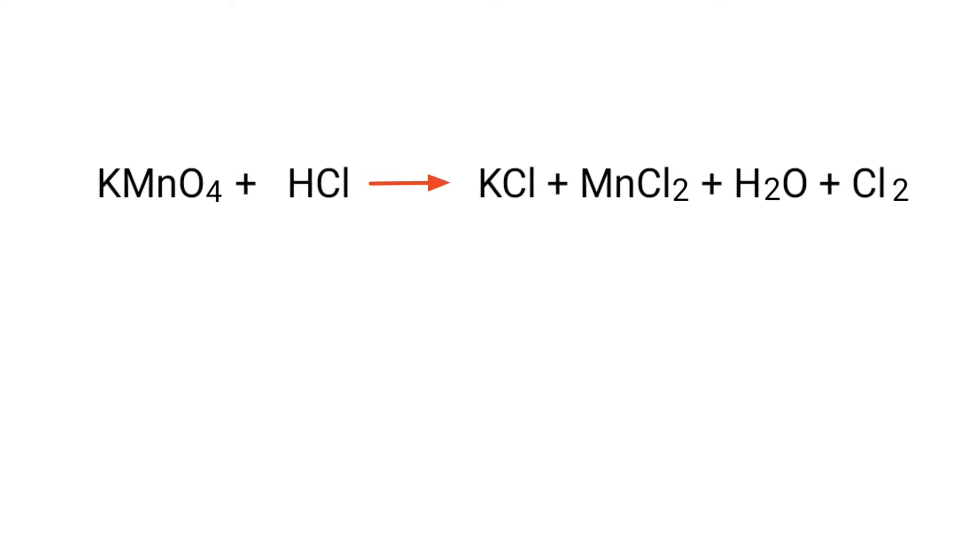Figure the reducing and oxidizing agents by the rules of assigning oxidation numbers. In this equation, chlorine has a charge of minus 1 and is changing into 0, so chlorine is being oxidized.